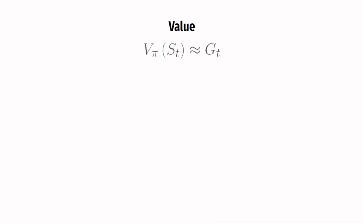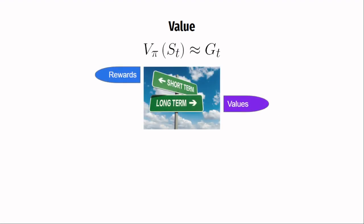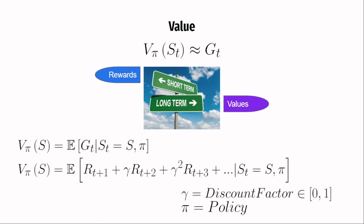The value function estimates the returns that can be gained by following a specific policy. Understand that the rewards indicate what is good for the agent in an immediate sense, whereas the value function specifies what is good in the long run. The equation of the value function is given as the expected return at a particular state and following policy pi. This can also be written by expanding the return.